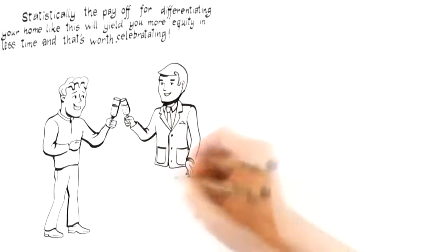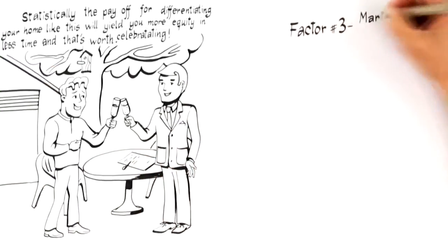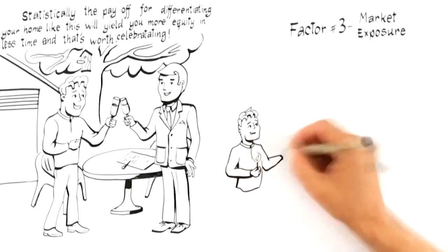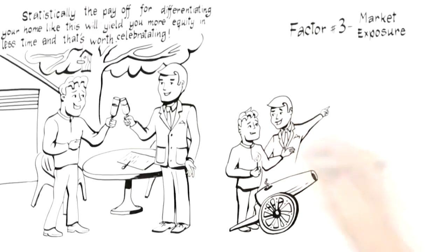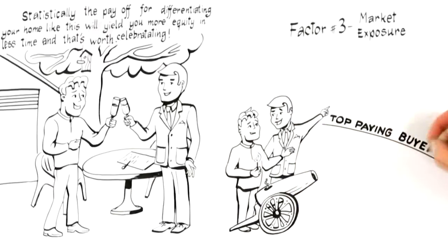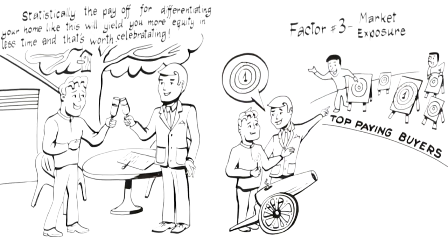Moving on to factor number three: market exposure. Once your home has been differentiated to target top-paying buyers like a loaded cannonball, it's ready to fire. But this next factor ensures when you launch your home onto the market, it's aimed at the right target. This requires you to be especially careful when selecting a professional. Here's why.